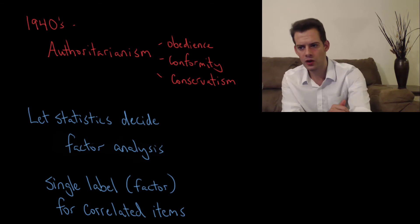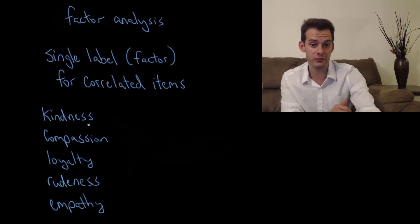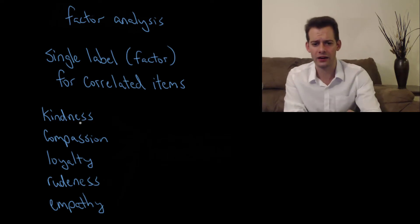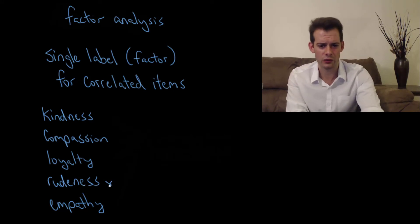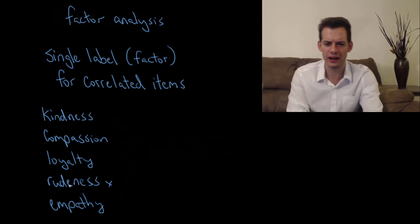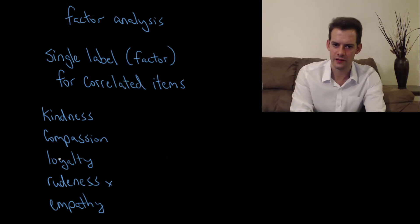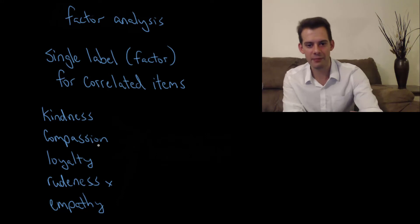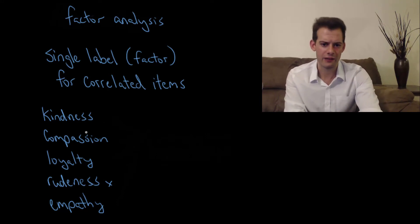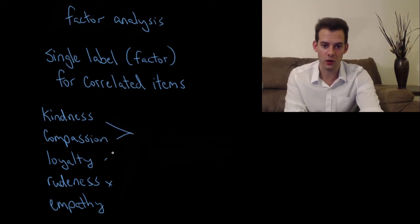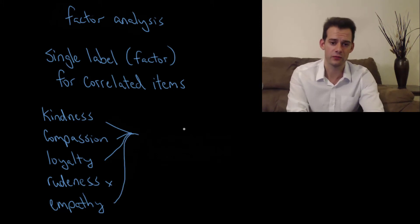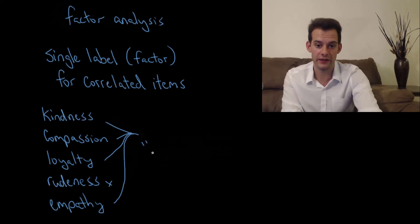Let's say in the case of personality we went out and measured a bunch of traits, and we find that people who score highly on kindness also score highly on compassion, loyalty, and empathy, but they don't score highly on rudeness. We might look at this list and say there's something these things have in common — kindness, compassion, loyalty, and empathy sort of go together. If we then did some statistical analysis we might find that all of these scores are correlated, and so we might be able to come up with a single factor that explains all of these. We would then come up with a label for this, and in this case we might use the label agreeableness.